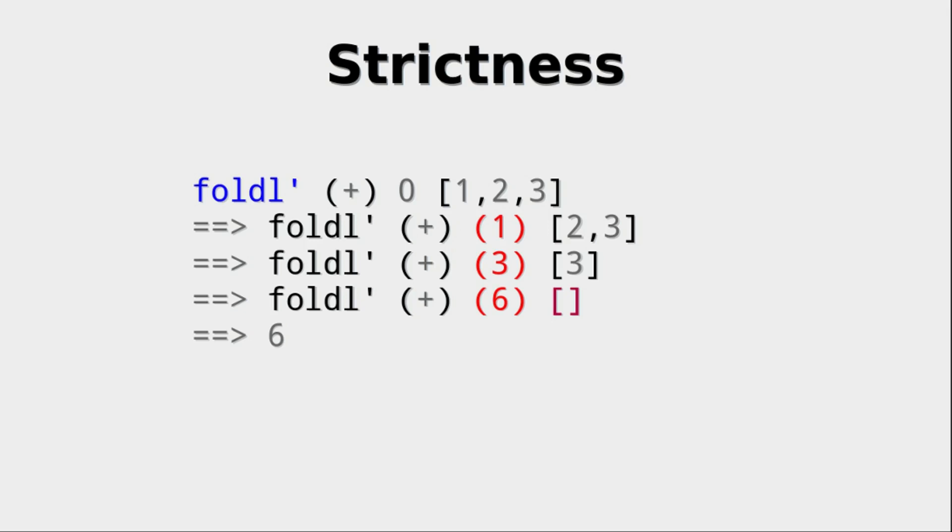FoldL prime is the strict version of foldL. By the way, other list functions or some other functions have a strict counterpart to them. And as we can see here, the huge difference is that the accumulator every time we apply the new value to it gets evaluated right away. And we do not wait or build a thunk.